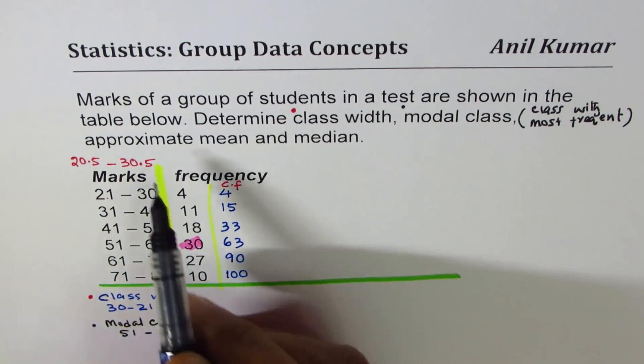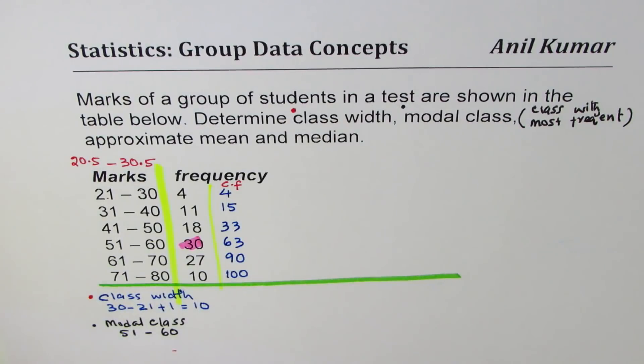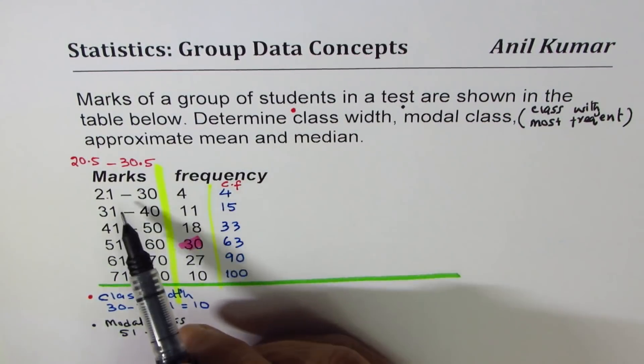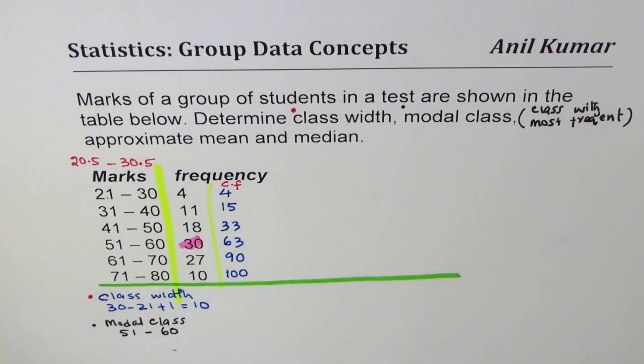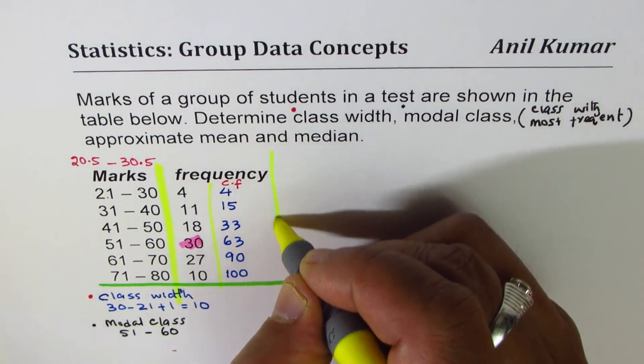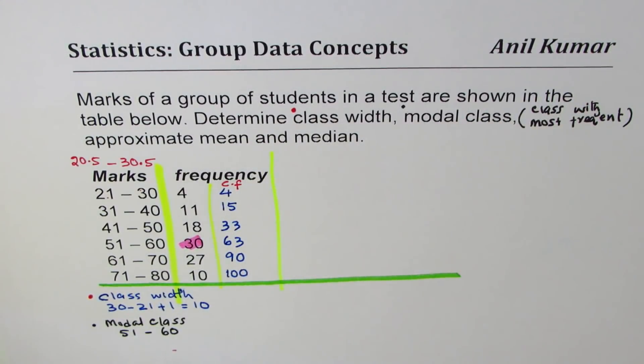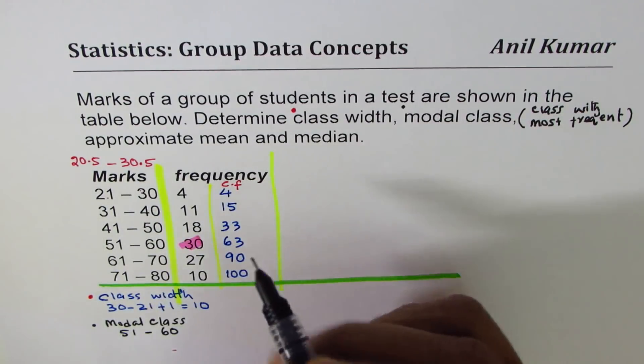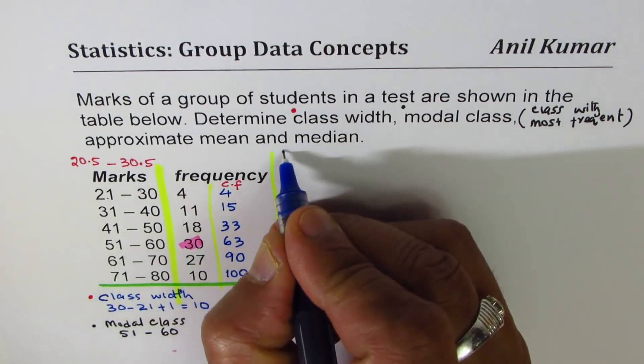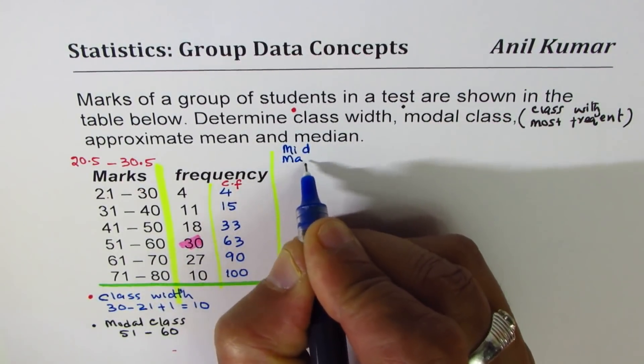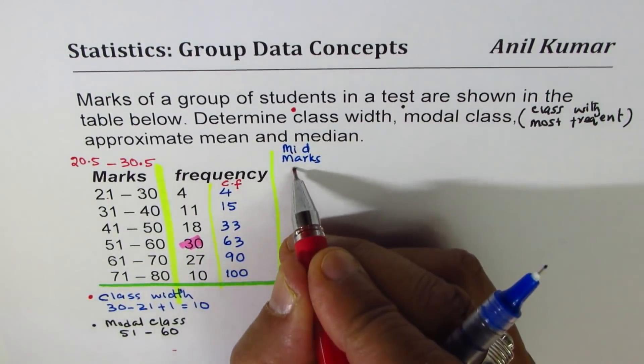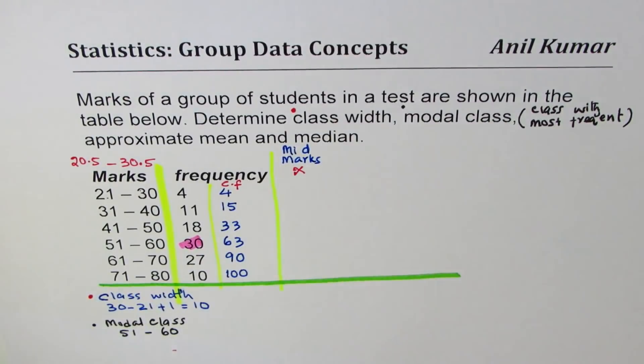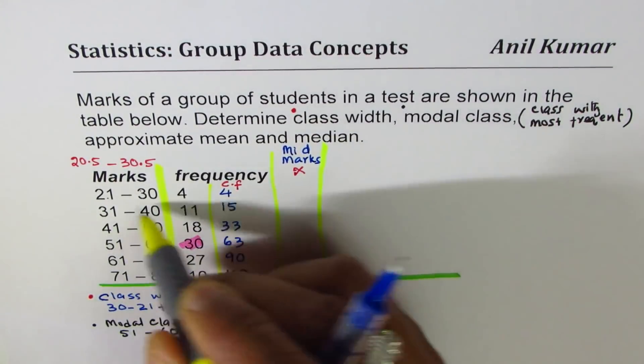Now next one here is approximate mean and median. Since we don't have details of the marks, we just know in a group there are four but we don't know exact numbers, so always mean and median will be approximate values. Steps to create mean are find the mid value of marks. So let's first find mid value of marks.